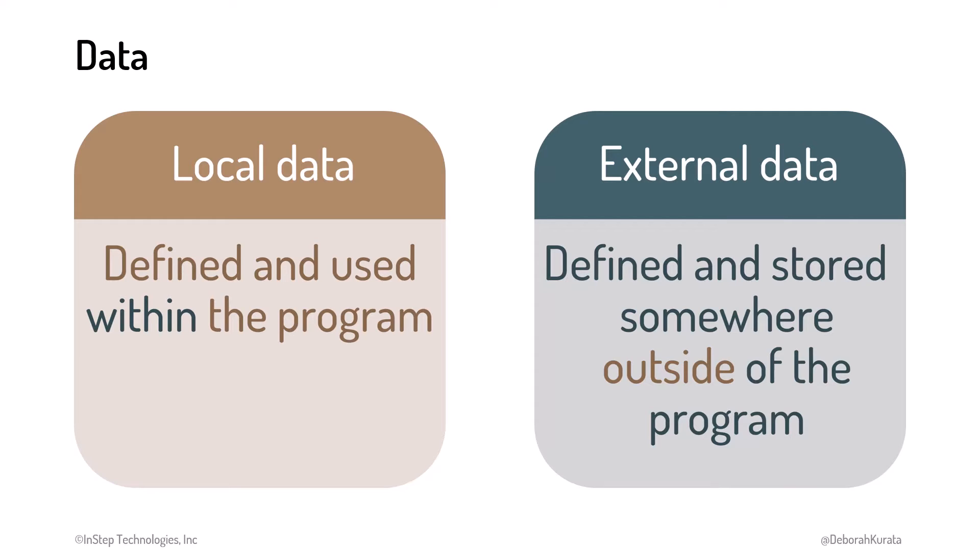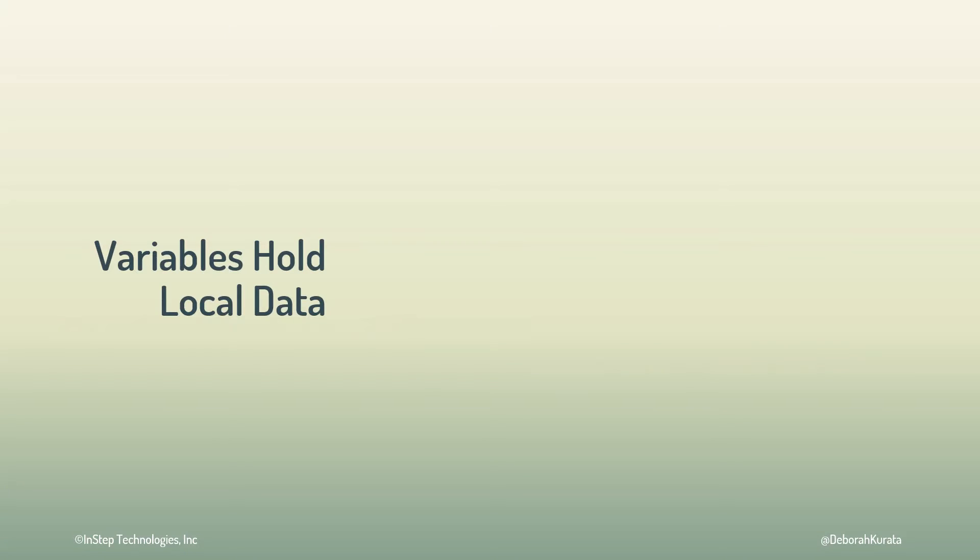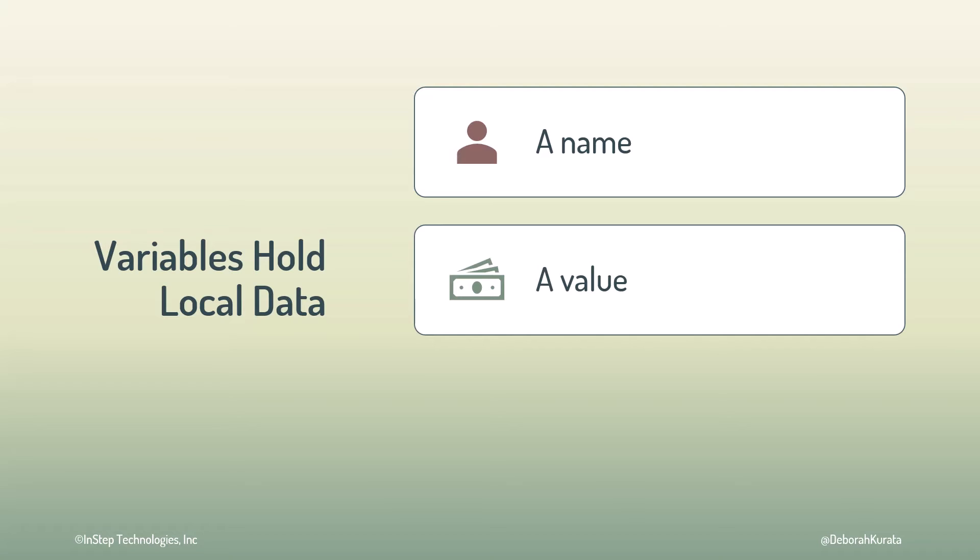Let's talk about local data first. Each piece of local data that our application works with is stored in a variable. A variable has three characteristics. A name, so our instructions can refer to that data. A value, which is the piece of data itself. And a data type, which is the kind of that data.